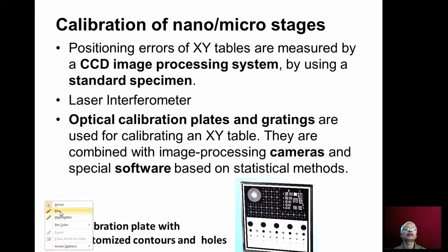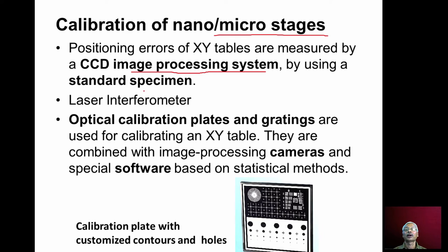How do we calibrate the nano stages and micro stages? We can use image processing, system software, cameras, and standard specimens for calibrating them. Linear interferometers can also be used for calibration. Calibration plates with different contours, holes of different sizes, and optical gratings can be used along with a laser system to find the amount of error at different positions.